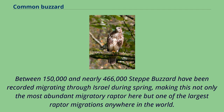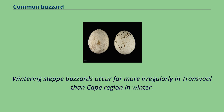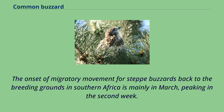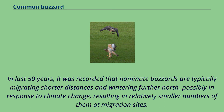Migratory movements of southern Africa buzzards largely occur along the major mountain ranges, such as the Drakensberg and Libombo Mountains. Wintering steppe buzzards occur far more regularly in Transvaal than the Cape region in winter. The onset of migratory movement for steppe buzzards back to the breeding grounds is mainly in March, peaking in the second week. Steppe buzzards molt their feathers rapidly upon arrival at wintering grounds and seem to split their flight feather molt between breeding grounds in Eurasia and wintering grounds in southern Africa. In the last 50 years, it was recorded that nominate buzzards are typically migrating shorter distances and wintering further north, possibly in response to climate change, resulting in relatively smaller numbers at migration sites.